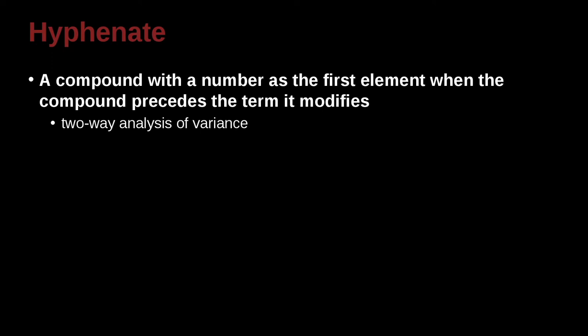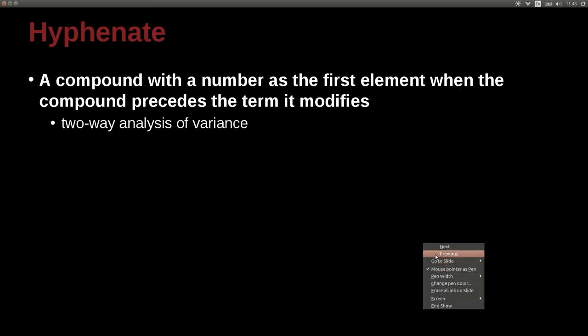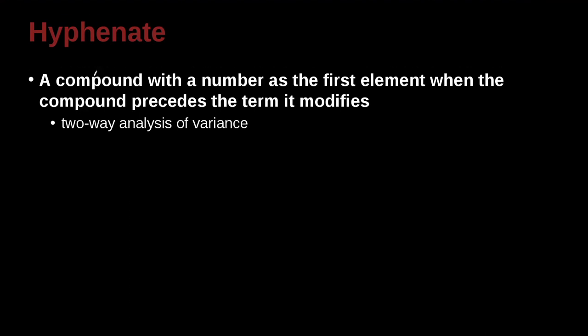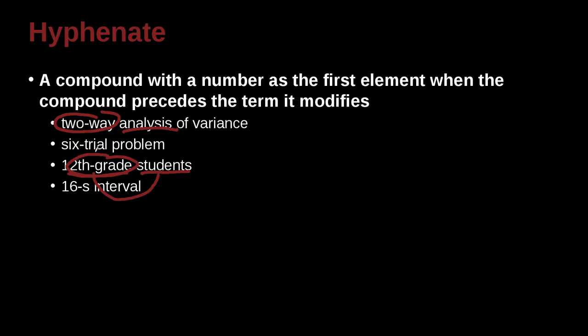You can hyphenate a compound with a number as the first element when the compound precedes the term it modifies, such as two-way analysis. So this two-way, we're going to hyphenate this. Why? Because normally it'd be two words, two way, but it actually means one thing, and it's preceding the term it modifies, which is analysis, and it has a number in it. Six-trial problem. 12th-grade students. Who are the students? They are the students in the 12th grade. But we don't want to really separate this out and make it unclear. We want to just put it together. This is one thing.